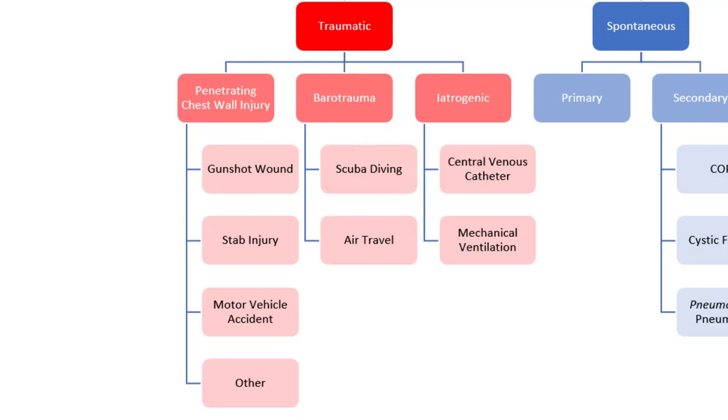There are also iatrogenic causes of traumatic pneumothorax. For instance, there is a notable risk of pneumothorax associated with placement of central venous catheters in the internal jugular and subclavian veins. Pneumothorax may also occur during mechanical ventilation, which is associated with elevated airway pressures. Iatrogenic pneumothorax may also result from thoracentesis, lung biopsy, and a variety of other procedures involving the thoracic region.